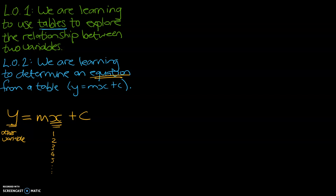The m and the c are numbers that come from your table. The m refers to the difference that you've identified — we're going to start calling that the gradient, or how much it changes by. And the c relates to the corresponding value when x is equal to zero. So what would the other value be? That might not make sense now, but when we get into some examples, hopefully that'll become clearer.